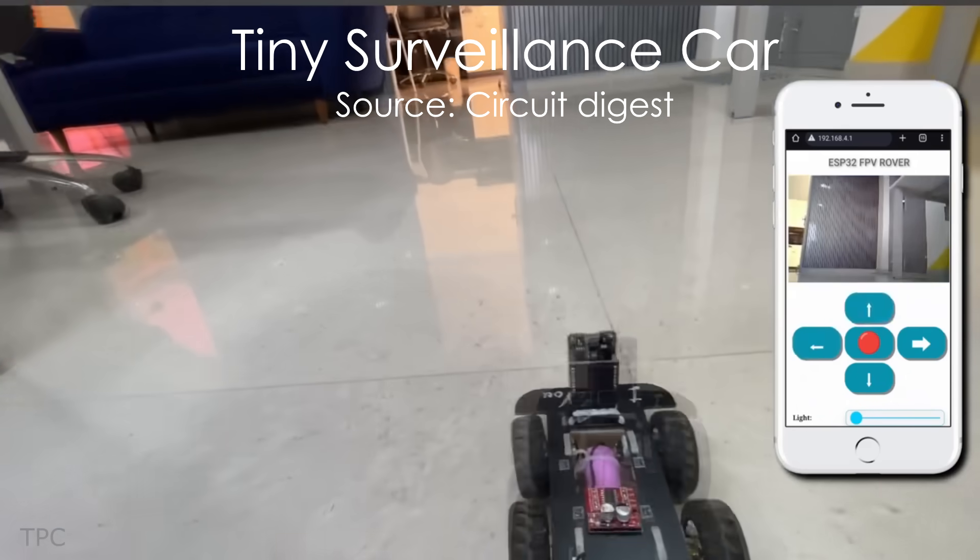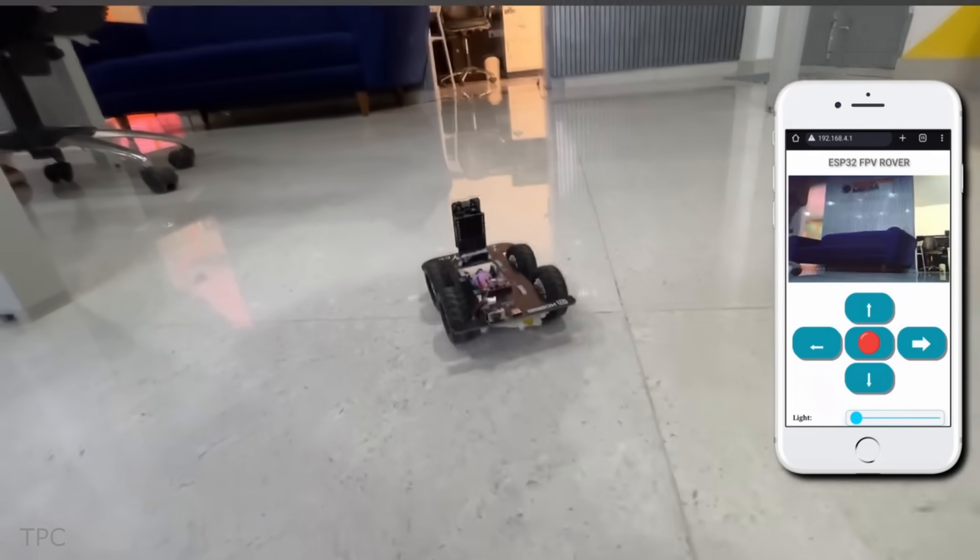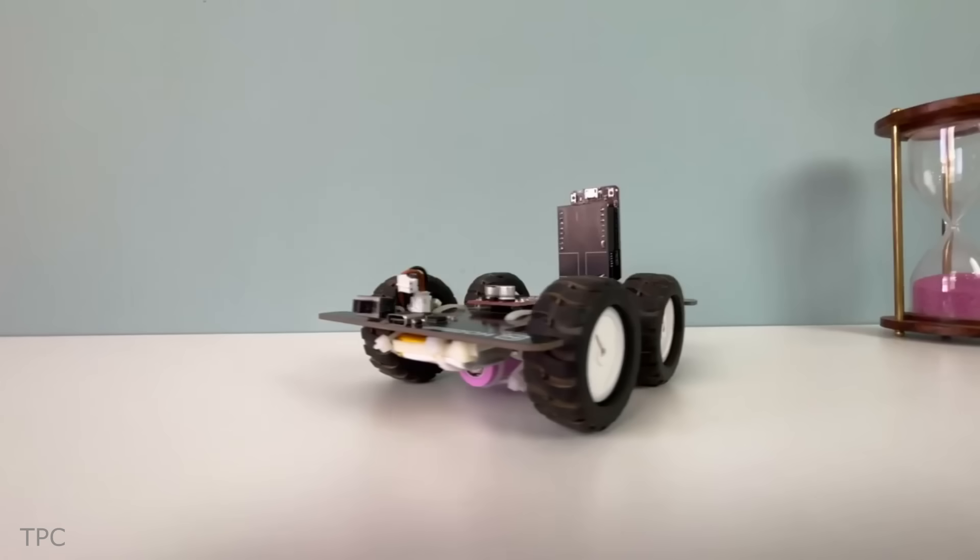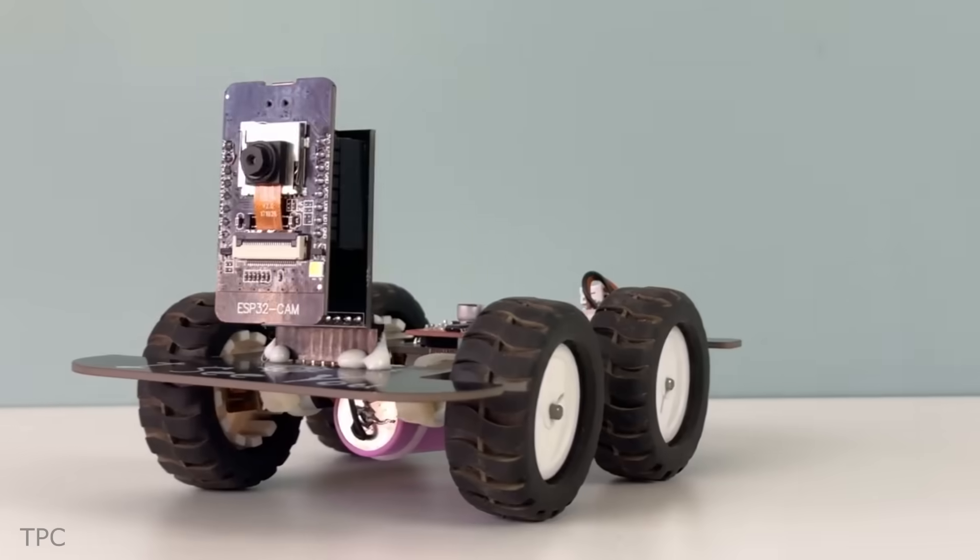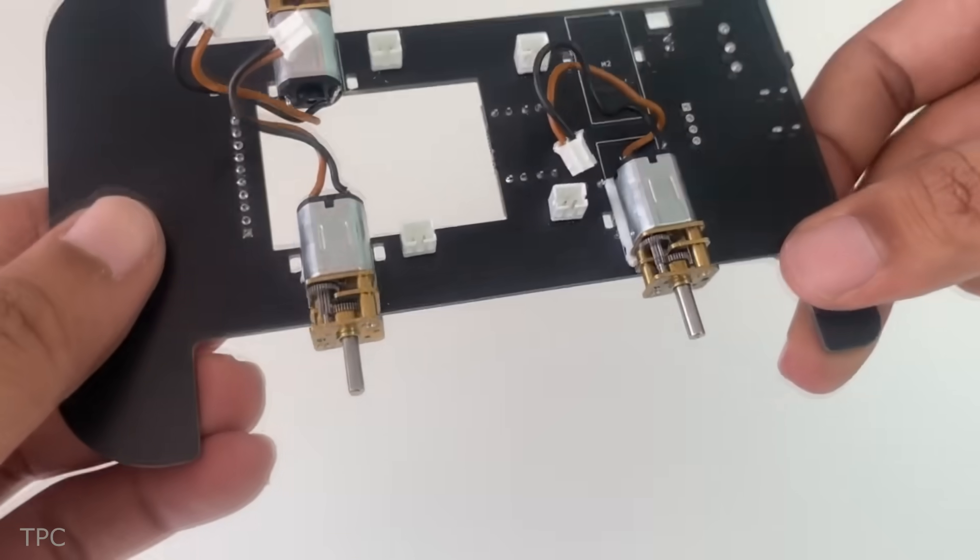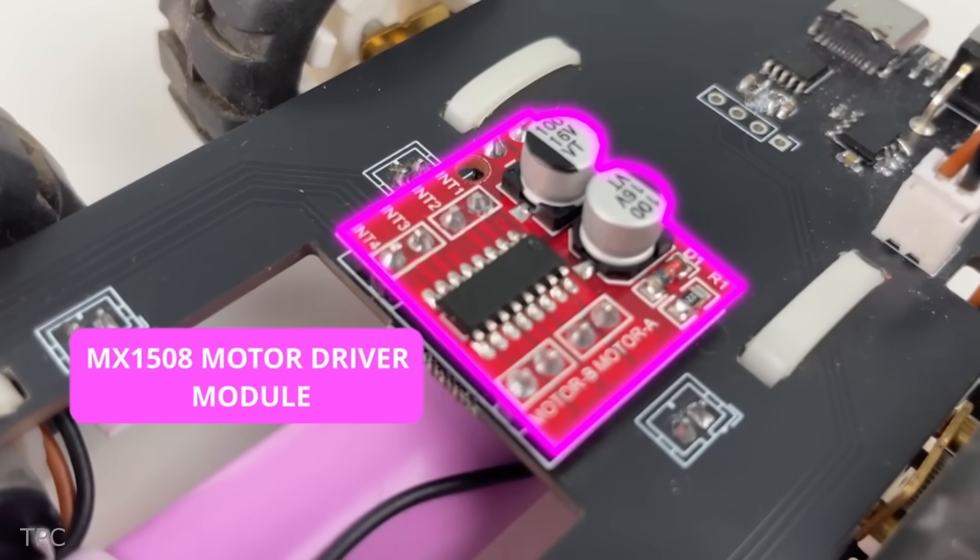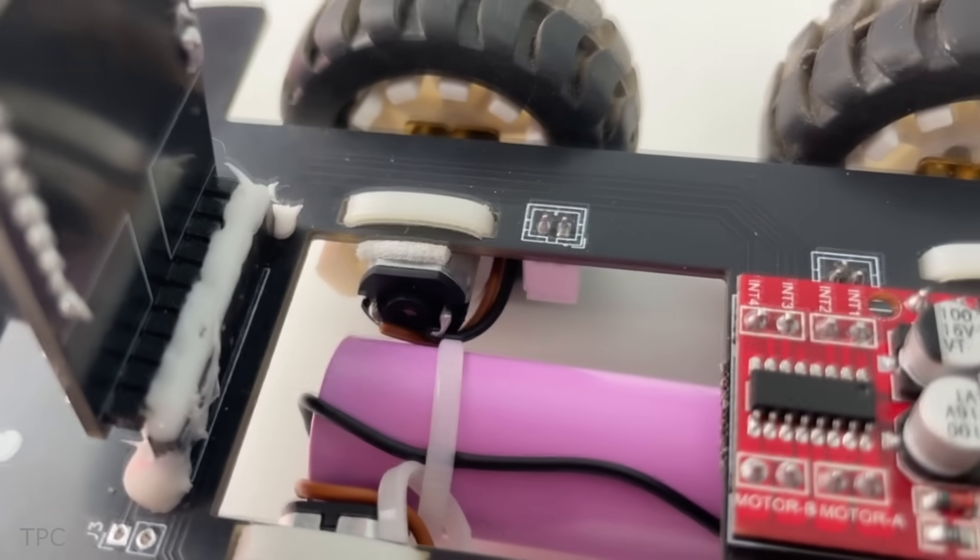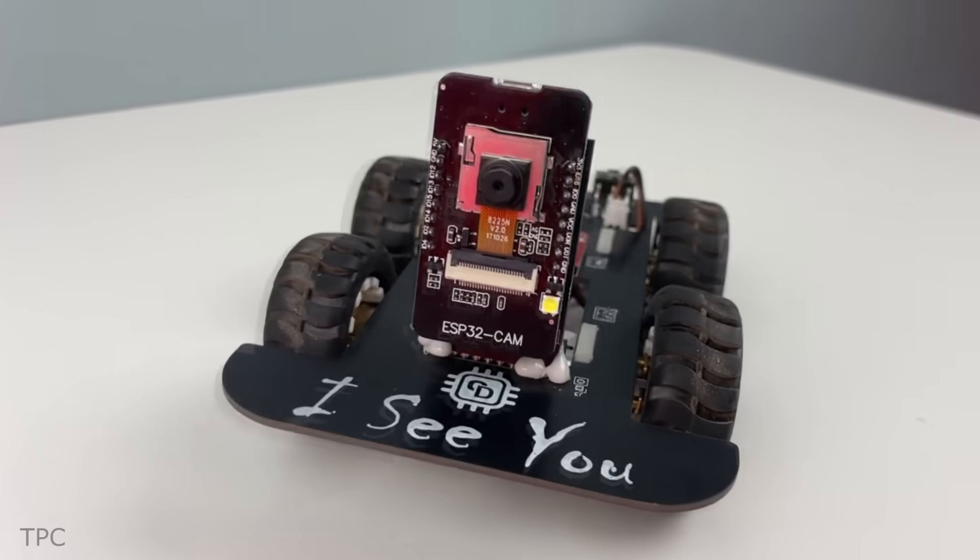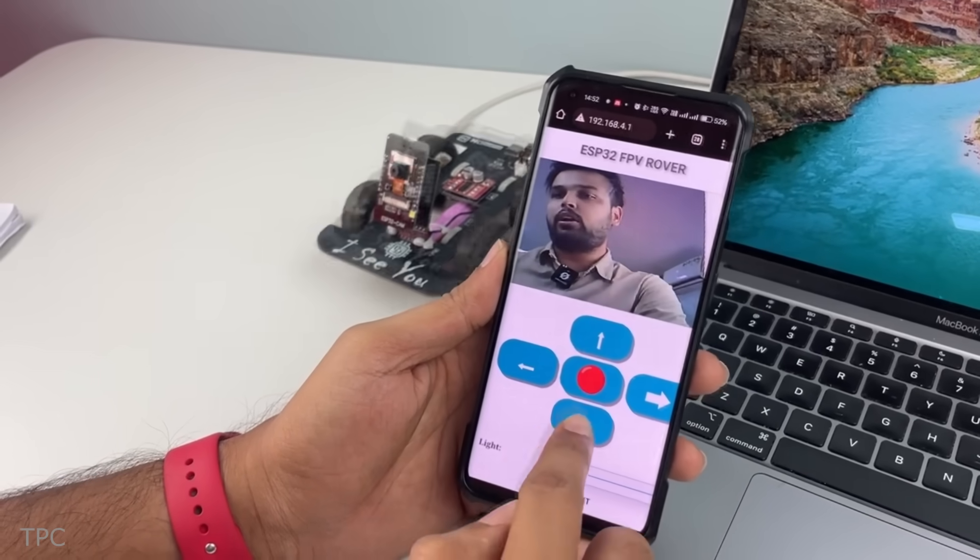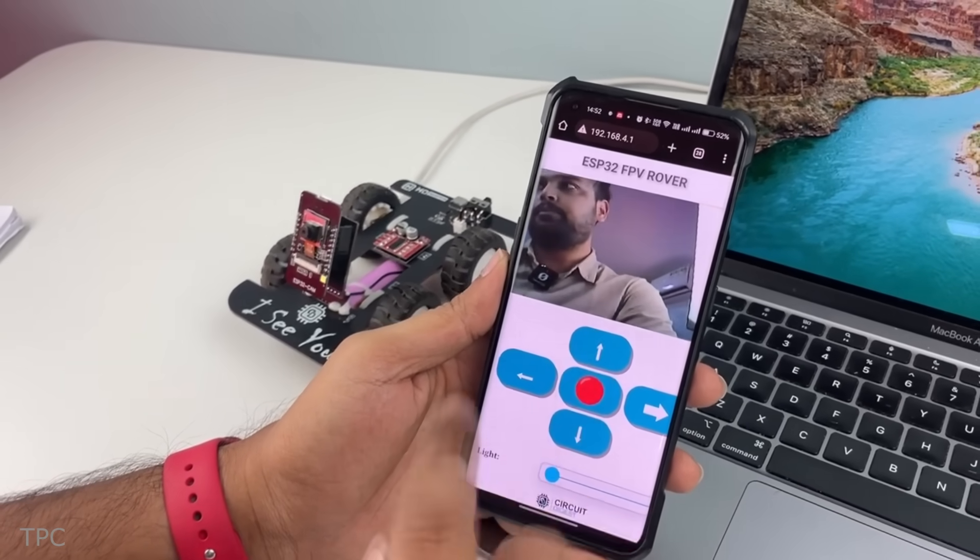Number 7. A surveillance robot is most effective when it is tiny, has minimal components, and is fast. The Circuit Digest team considered all these factors in creating this spy car. To make it compact, they assembled the car on a single PCB, integrating the motor driver and battery charging circuit. Four N20 DC motors provide smooth movement, while an ESP32 cam records everything and sends the video stream to a web server, from which the bot's movements can be controlled.